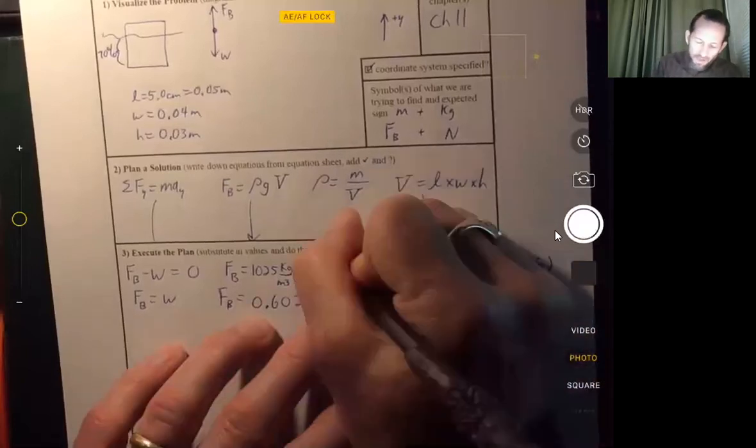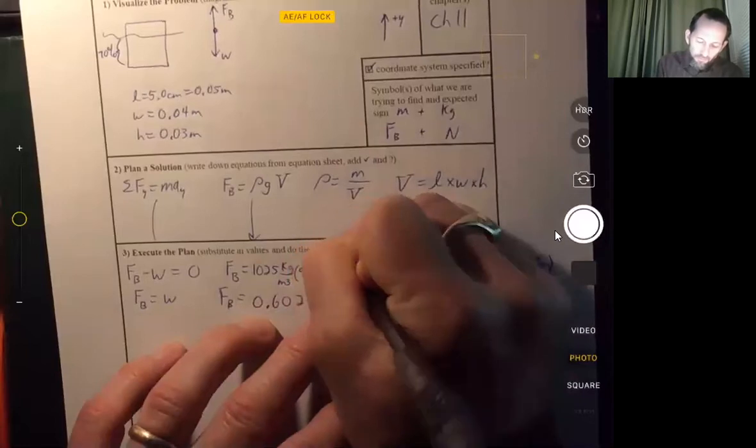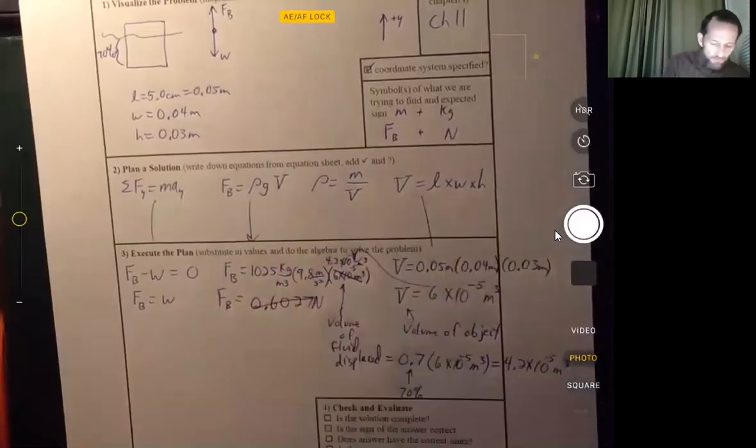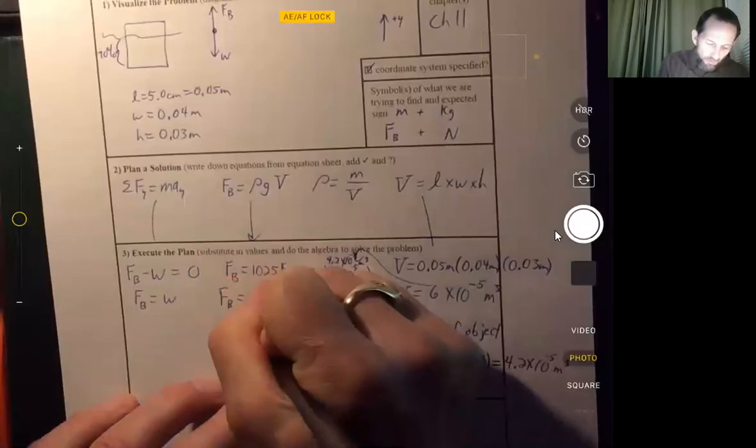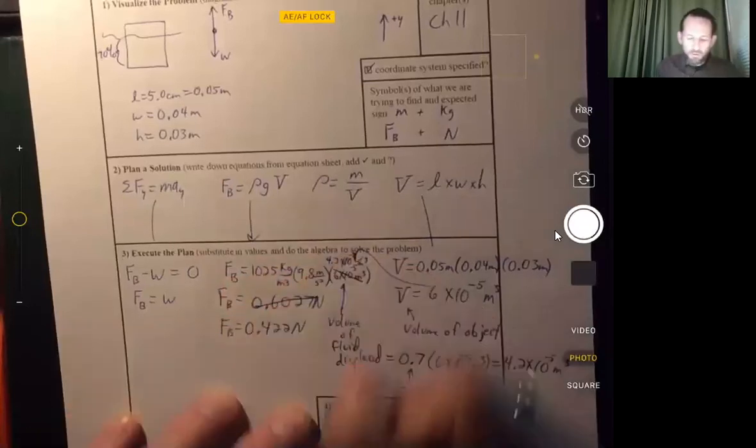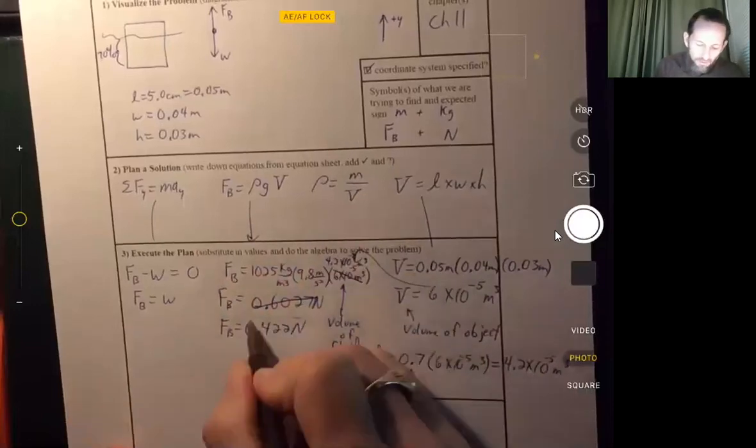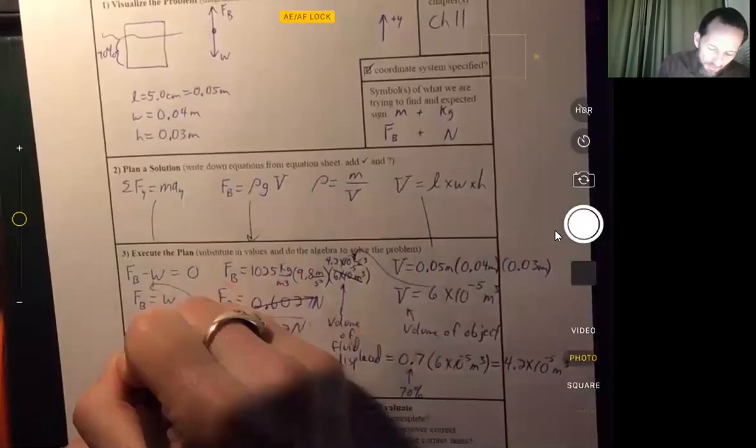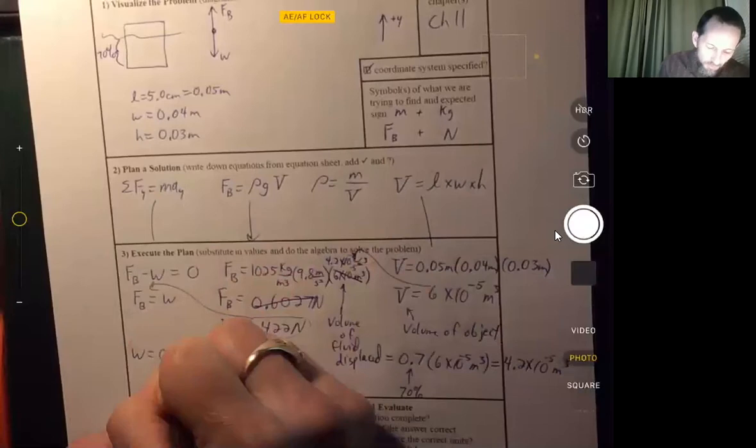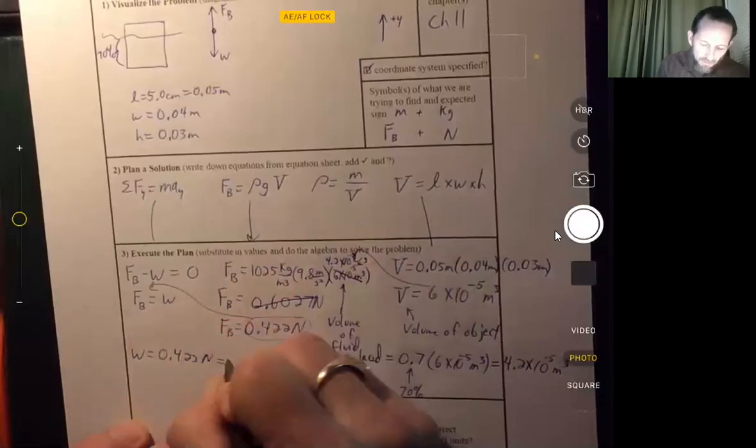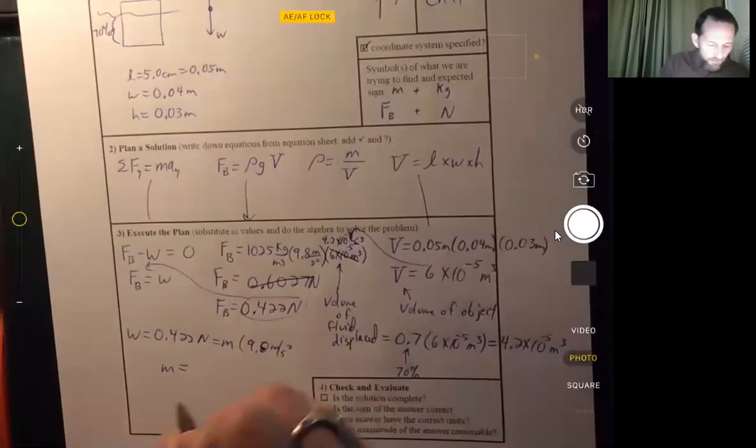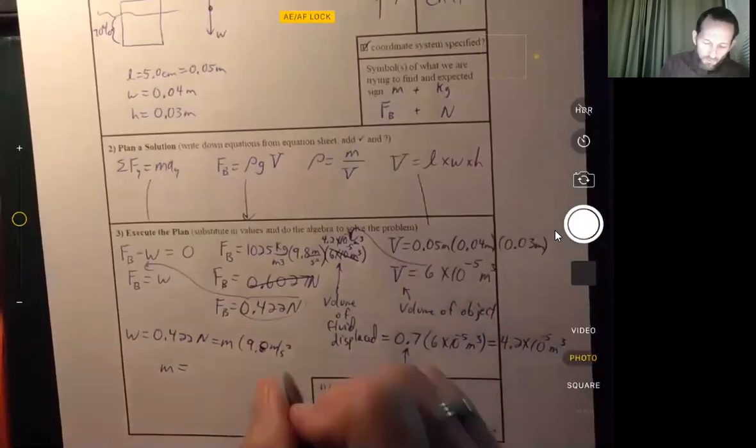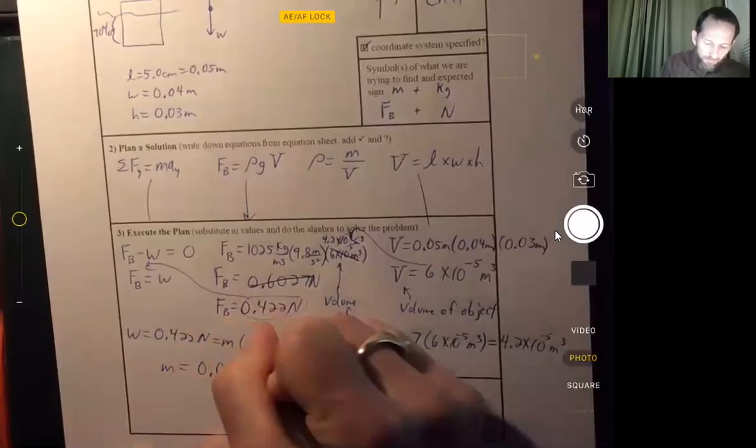And then we put that value in there. And that gives us a buoyant force of 0.422 newtons. All right. Then we can take that value and plug it in there. So we get a weight of 0.422 newtons. And that's equal to the mass times 9.8 meters per second squared. And so the mass comes out to 0.0431 kilograms.